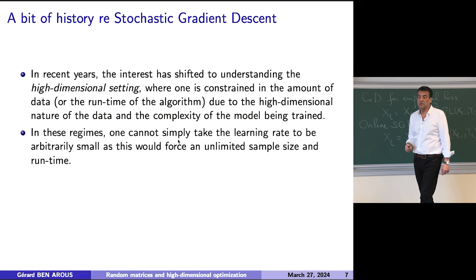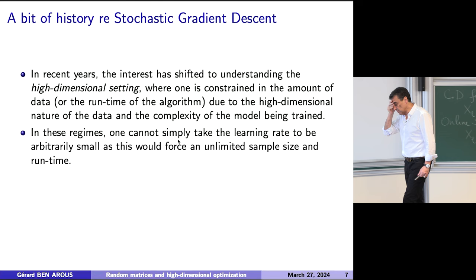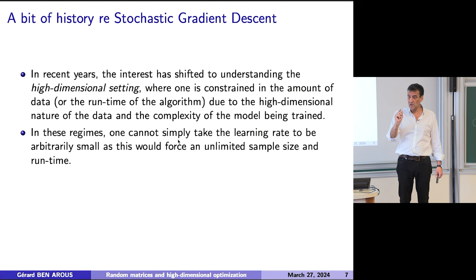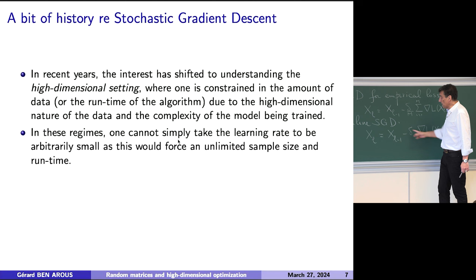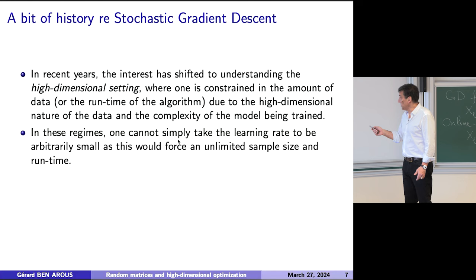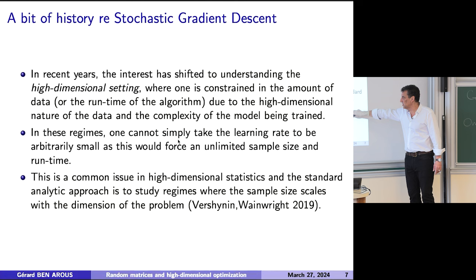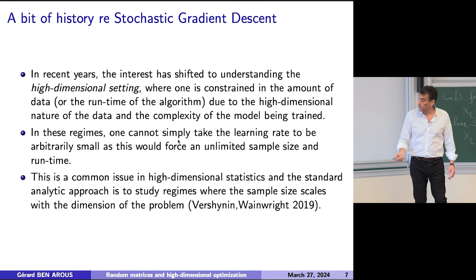Now we are looking at high-dimensional things — another way to say that is large P and D, or small m, which is the same thing. In the classical regime nothing prevents you from taking delta to be pretty small because you have many data. But a lot of studies on SGD in high dimension today are, in fact, very close to initialization, where you essentially don't move — but that's not what you're really interested in. You cannot take the learning rate to be arbitrarily small in general, because then you would need a very large sample size. If you want a good survey of this type of question, the work by Vershynin and Wainwright is nice.